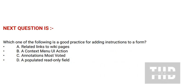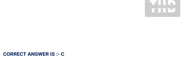Next question: Which one of the following is a good practice for adding instructions to a form? Option A: related links to wiki pages. Option B: a context menu UI action. Option C: annotations. Option D: a populated read-only field. The correct answer is Option C.